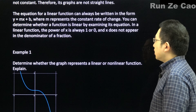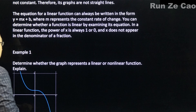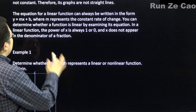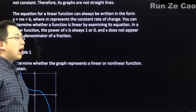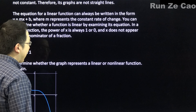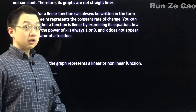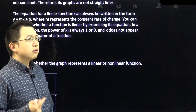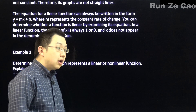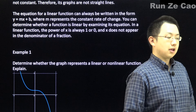The equation for a linear function can always be written in the form y = mx + b, where m is the slope, or constant rate of change, and b is the y-intercept — the point at which the graph meets the y-axis. The y-axis is when x equals zero. Therefore, m times x equals zero, and y equals b. That's why b is the y-intercept.